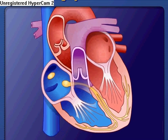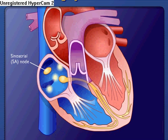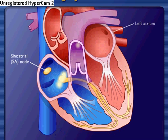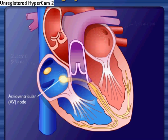Action potentials originate in the sinoatrial node and travel across the wall of the atrium to the atrioventricular node. Action potentials pass slowly through the atrioventricular node to give the atria time to contract.